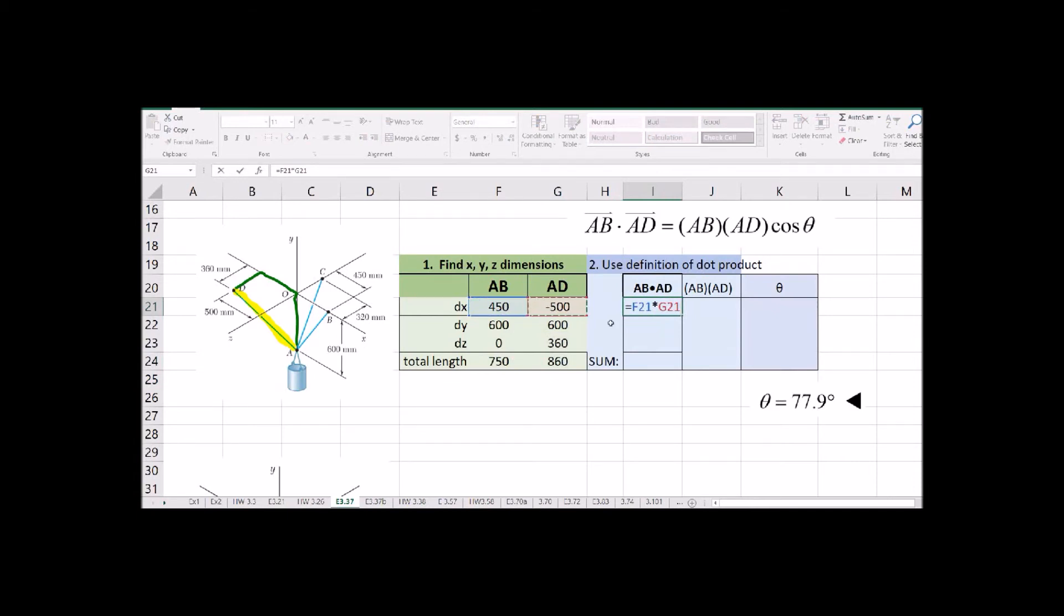The dot product, X times X, and then Y times Y, and Z times Z. And then we're going to add everything in this column. So that's our dot product.